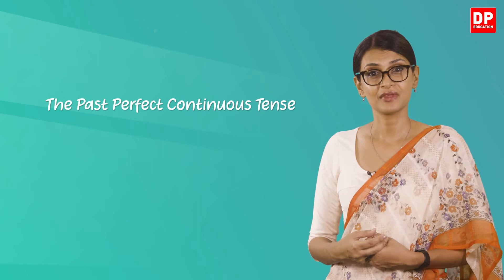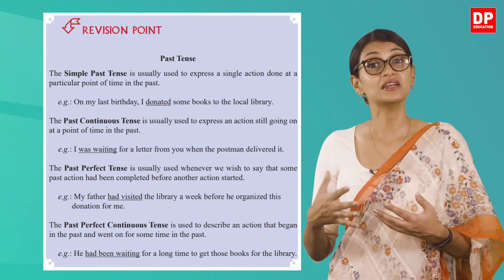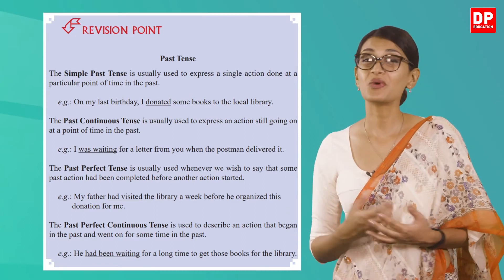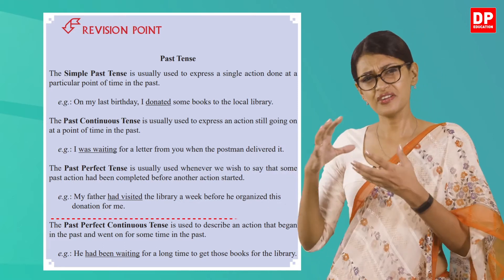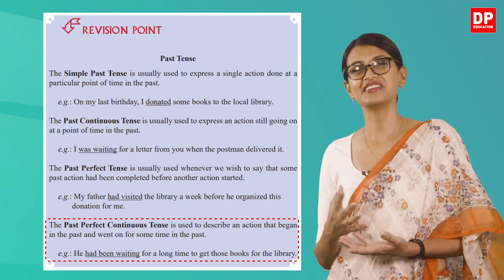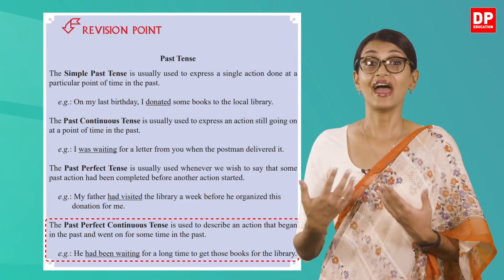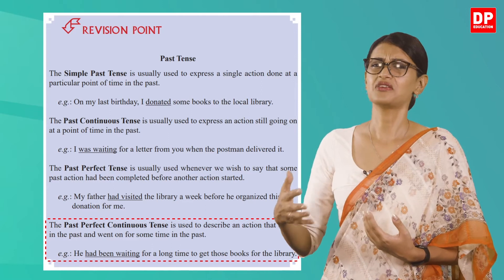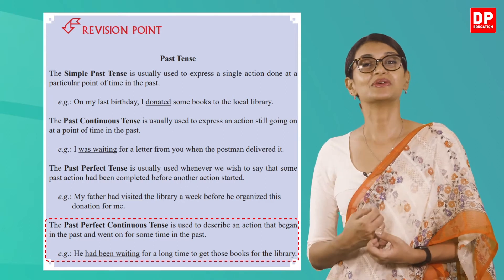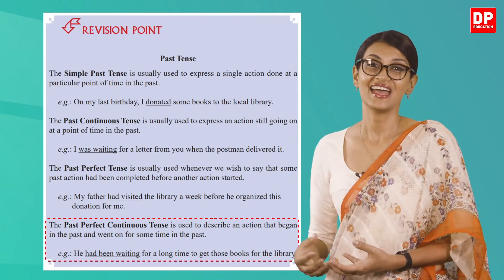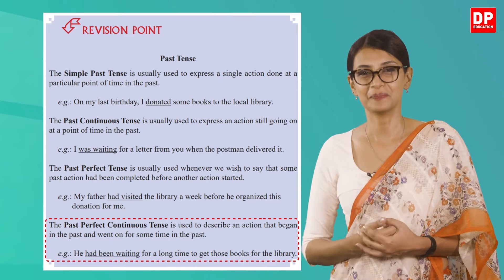In this lesson you will be introduced to the past perfect continuous tense. On page 12 in your pupils book you will see different definitions given in a blue box. The past perfect continuous tense is used to describe an action that began in the past and went on for some time in the past. It is also known as the past perfect progressive tense and shows an action that started in the past and continued up until another time in the past.